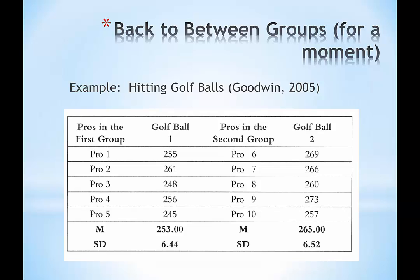Hopefully you can see the notion here. The mean distance the five pros hit golf ball one was 253 yards, and the mean distance the pros in the second group hit golf ball two was 265 yards. It would be nice for the manufacturer to say that their balls get hit on average 12 yards further, with roughly the same standard deviations—that seems reasonable in terms of variability.